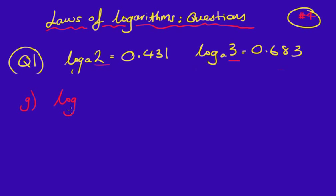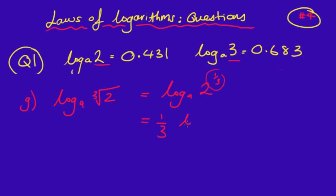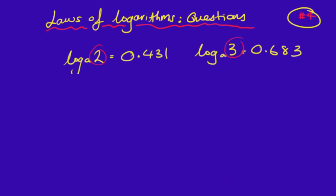Now find the value of log_a of the cube root of 2. I am going to look at my indices: the cube root of 2 is 2 to the power of 1/3. I can bring that power down in front of the log: (1/3) times log_a(2), which is (1/3) times 0.431. Putting that into the calculator gives 0.144 to 3 decimal places.